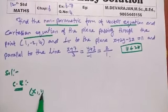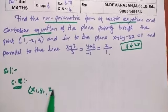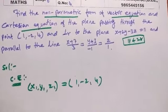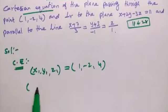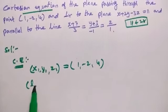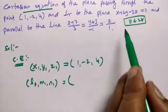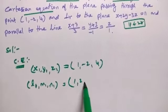The plane is passing through the point x1, y1, z1, so 1, -2, 4. So that we have L1, M1, N1 equal to xyz 1, 2, -3.